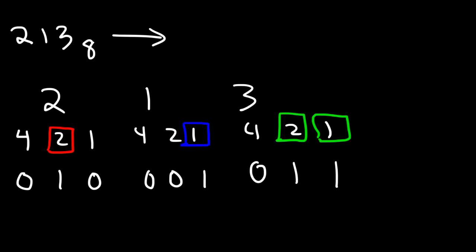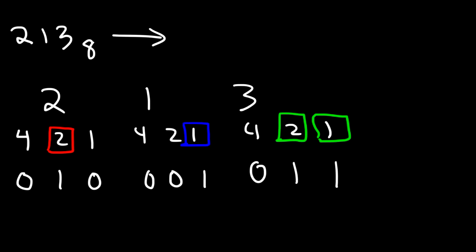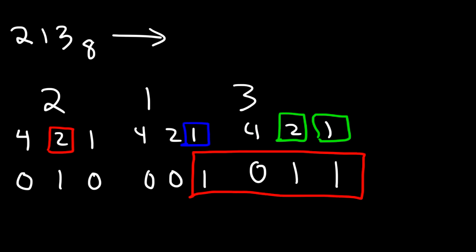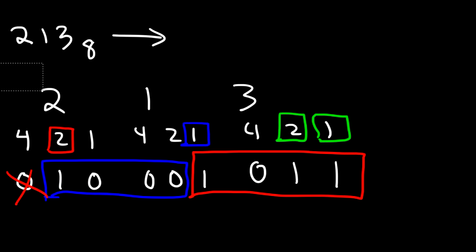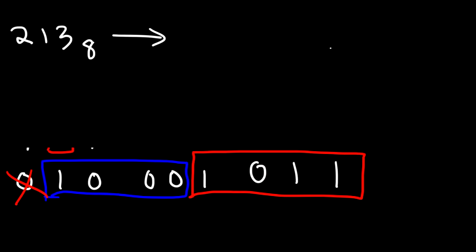Now what we're going to do is rearrange the binary numbers into groups of 4. So here's the first group of 4, and here is the second group of 4. Because there's no 1 here, we can ignore this leading 0. So rewriting the numbers, we have 1, 0, 0, 0 and also 1, 0, 1, 1.